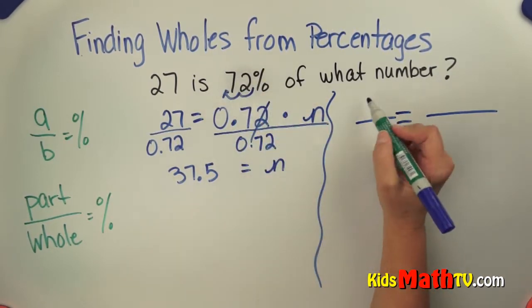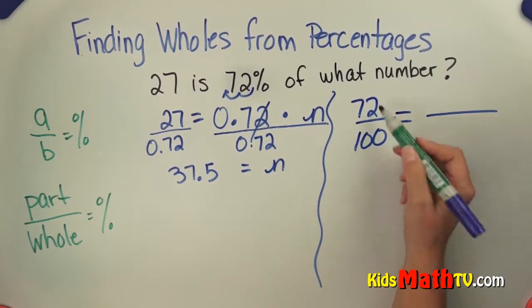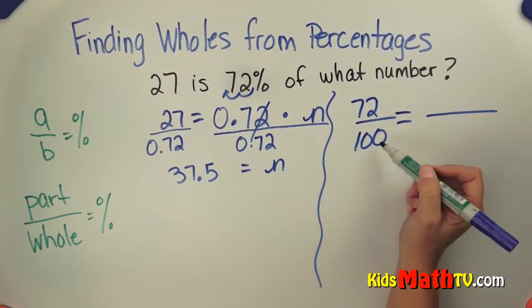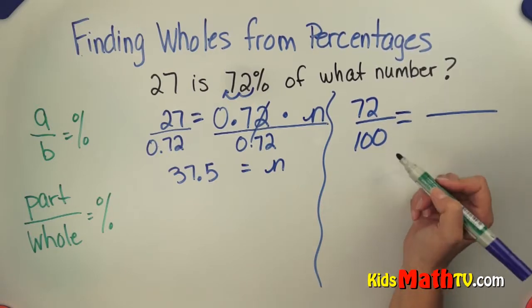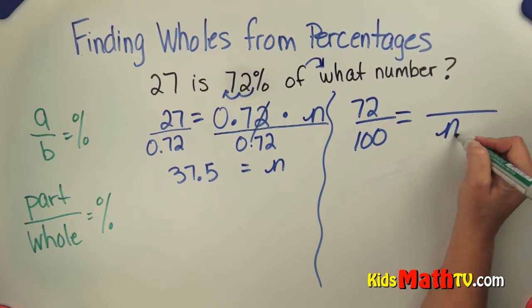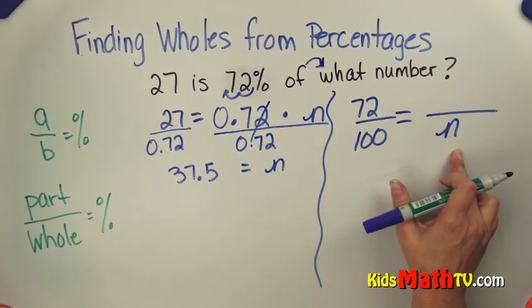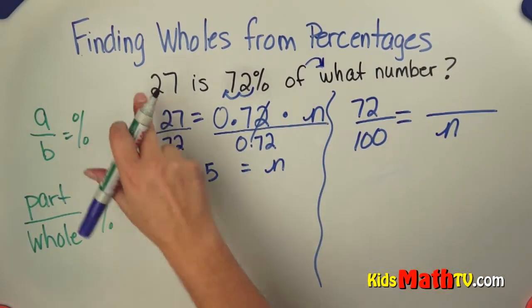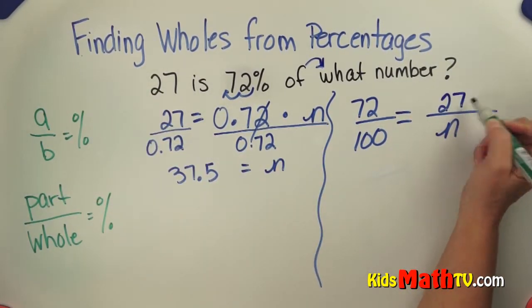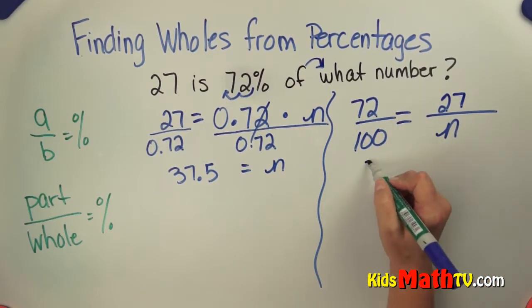I'm going to go with the percent first. 72% is 72 over 100. That's an easy ratio to write. Now I want to know what's the part and what's the whole. Of tells me the whole is coming next. I'm going to put my N as the denominator. That's the whole. Remember the whole goes on as the denominator. And 27 is the part. So 27 over some number N is 72%. Now we do cross products.